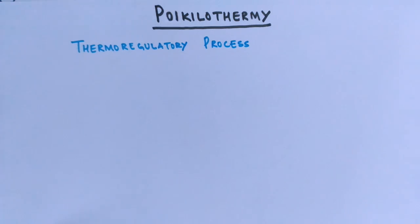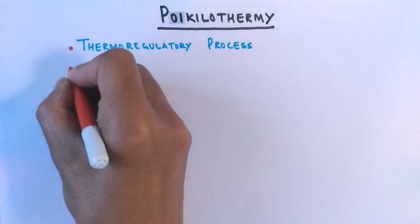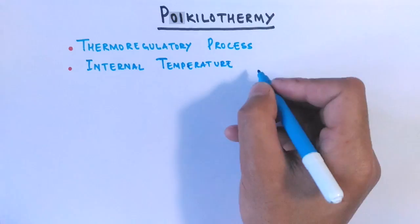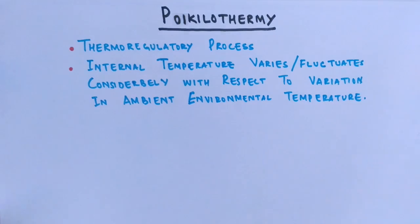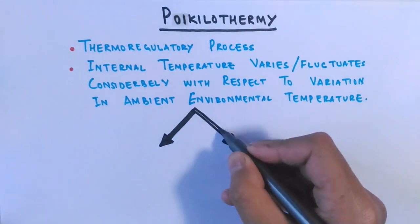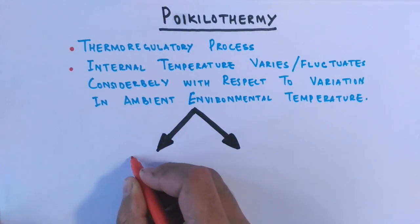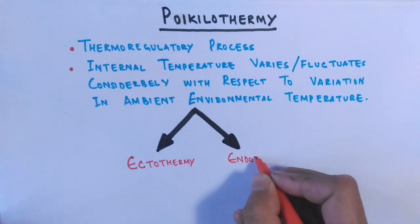The animals which tend to regulate their body via poikilothermy are termed as poikilotherms. In poikilothermy, internal temperature varies or fluctuates considerably with respect to variation in ambient environmental temperature. Poikilothermy process can be achieved by two modes that include ectothermy and endothermy.